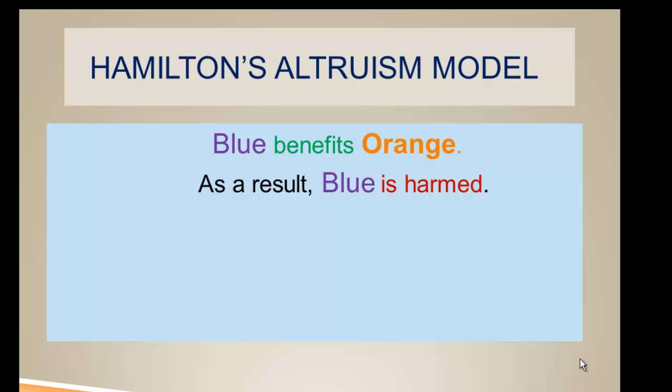We'll recall that Hamilton's altruism model was a two-agent model with just blue and orange. In altruism, the blue agent benefits orange and as a result blue is harmed.